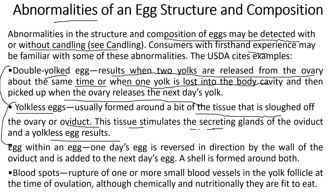Another abnormality is an egg within an egg. This is caused when one day's egg is reversed in direction by the wall of the oviduct and added to the next day's egg, with a shell forming around both. The result is a formation of two eggs within a single shell. This happens when a particular day's egg is reversed in the oviduct and combined with the next day's egg before the outer shell forms around both — a very rare abnormality.